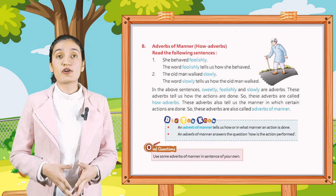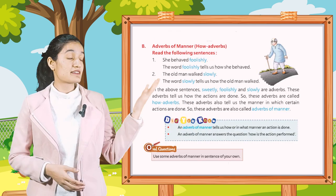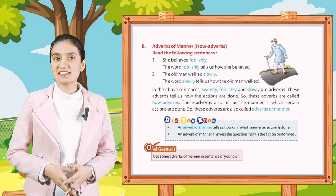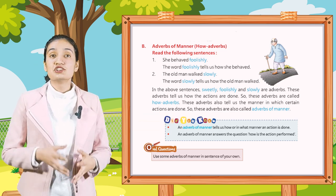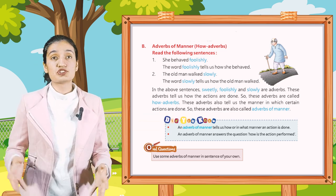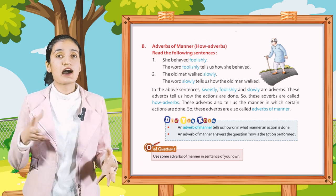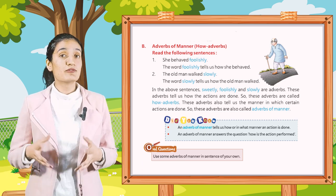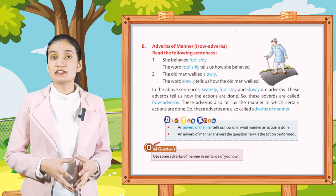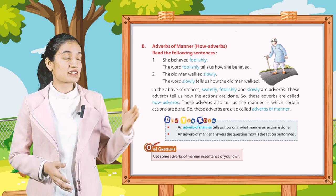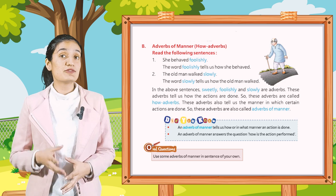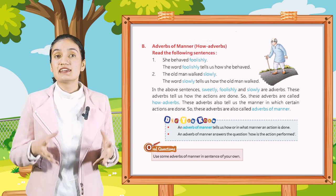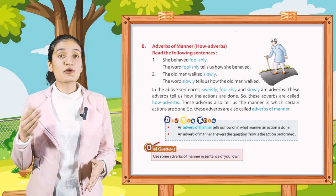Kinds of adverbs — adverbs are of different kinds. Part B: Adverbs of Manner — how adverbs. Read the following sentences. First: She behaved foolishly — the word 'foolishly' tells us how she behaved. Second: The old man walked slowly — the word 'slowly' tells us how the old man walked. In the above sentences, 'sweetly', 'foolishly', and 'slowly' are adverbs.